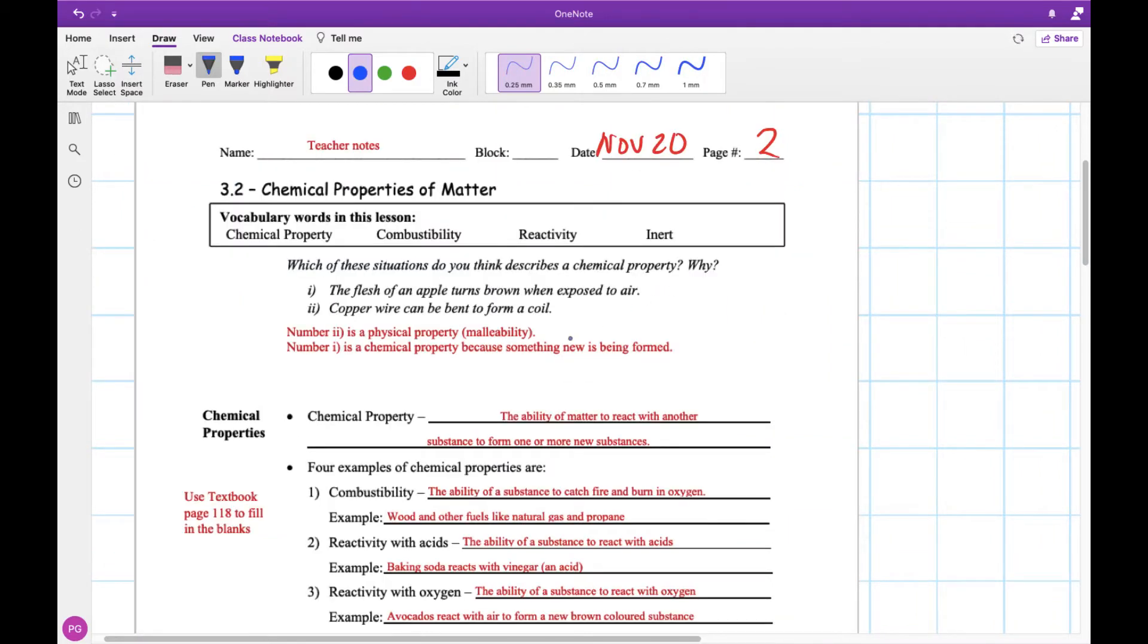In this one we're thinking about a chemical property and we've got two things: flesh of an apple turning brown and copper wire that can be bent. The second one we've actually already talked about. Number two is actually a physical property called malleability. But the first one is a chemical property because something new is being formed. The fact that our apple is turning brown when it's exposed to air tells us that some sort of reaction is taking place and something new is being formed, that brown layer.